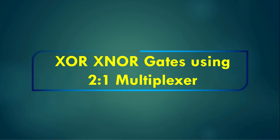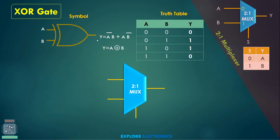Hello everyone, welcome to this video. In this video let us see how to implement XOR gate and XNOR gates using 2-to-1 multiplexer. XOR gate will be having the functionality of a-bar·b plus a·b-bar as output. It can be written as a XOR b. If you look at the output, 0 1 1 0 is the output for these kind of inputs.